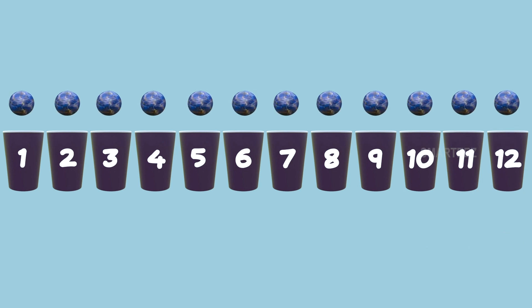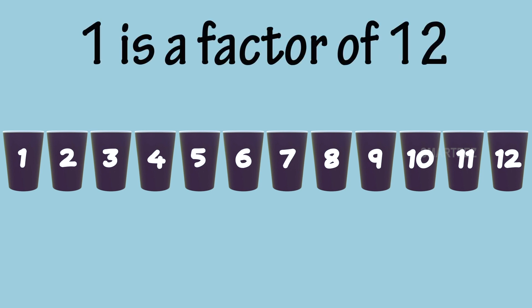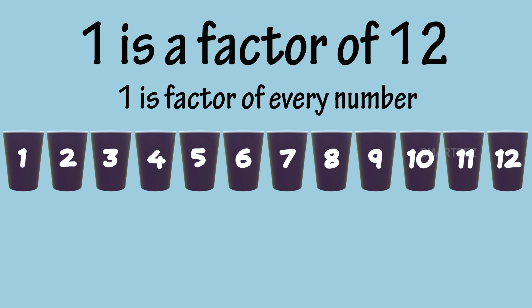Rick had a total of twelve marbles. First, he asked Rangu and his friends to put one marble into each cup and it filled twelve cups, leaving nothing left. So we call one a factor of twelve. In fact, one is a factor of every number. Also, when you write it as a fraction, you'll say each one of the cups holds one-twelfth of the whole set of marbles, as there are twelve cups holding all the marbles.